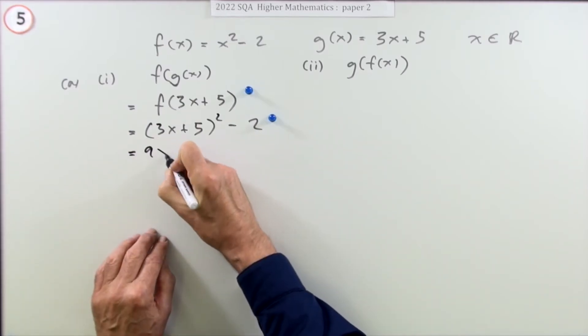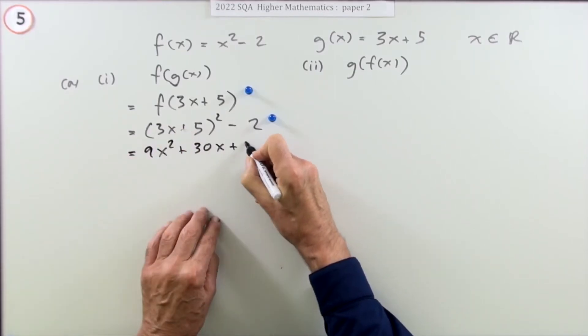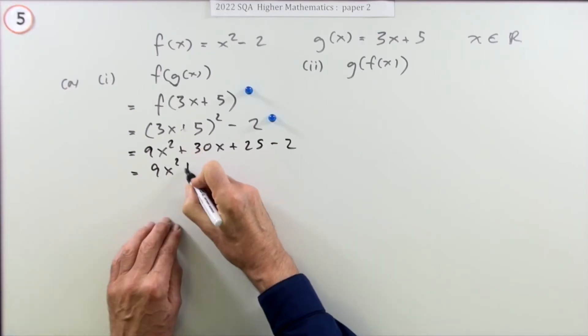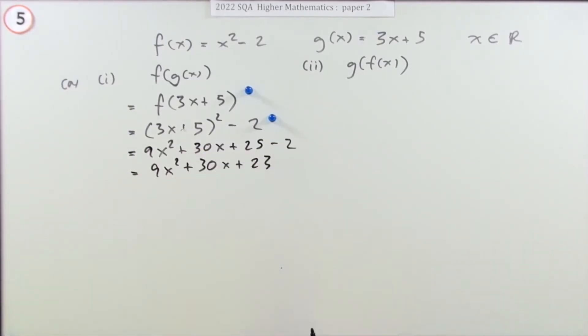Square the first: 9x squared. Twice the product: 30x. Square the last: 25. Take away 2, and you get f(g(x)) equals 9x squared plus 30x plus 23.